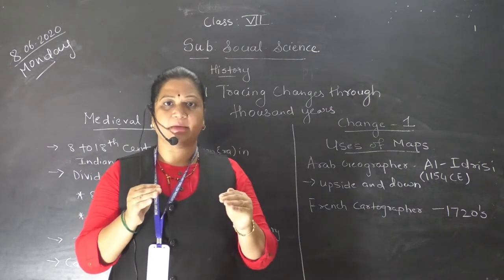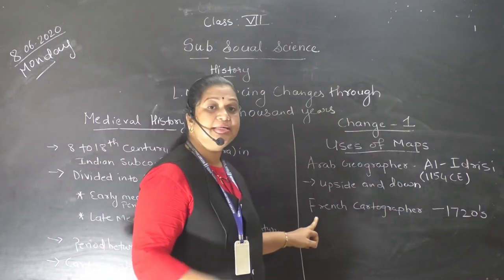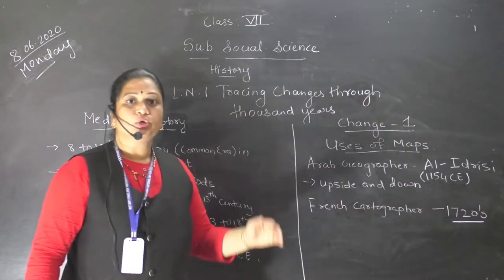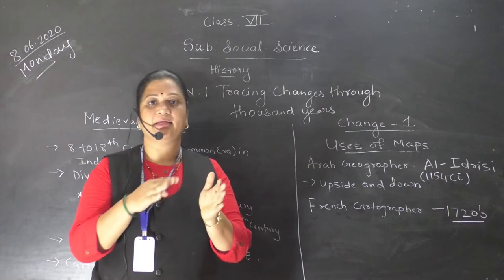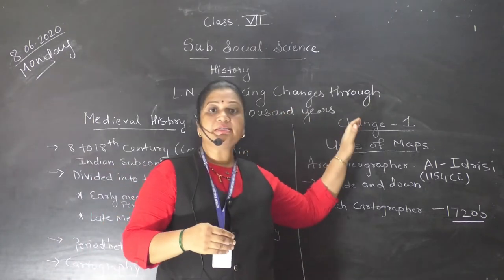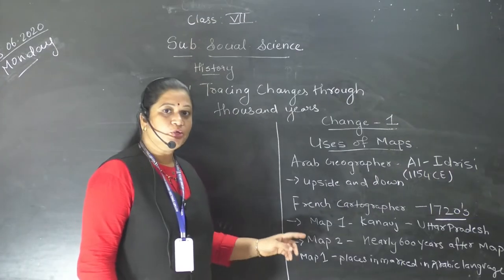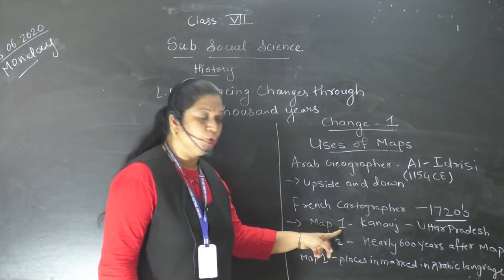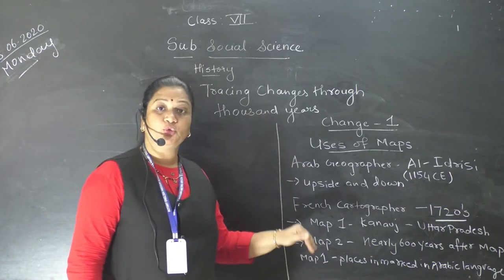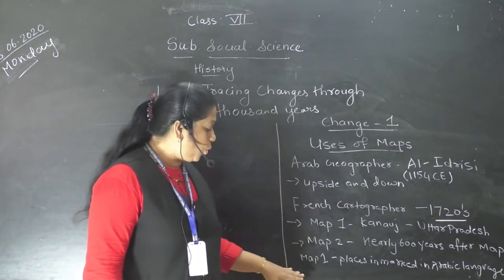Map number 2 is exactly the same as the map we study nowadays. That map was made by a French Cartographer in the 1720s. You can see the changes between map number 1 and map number 2. One more change in map number 1 is that Kannauj is marked in Uttar Pradesh. Map number 2 was made about 600 years after map number 1.